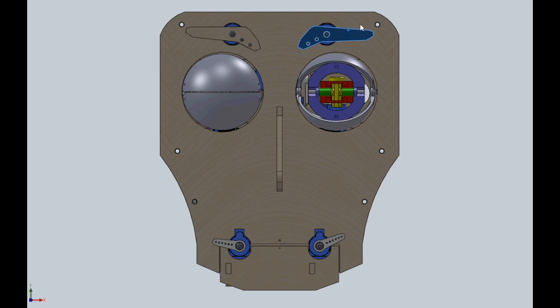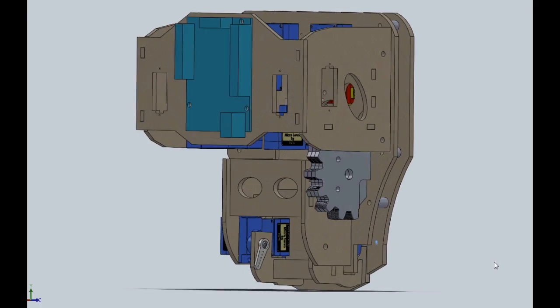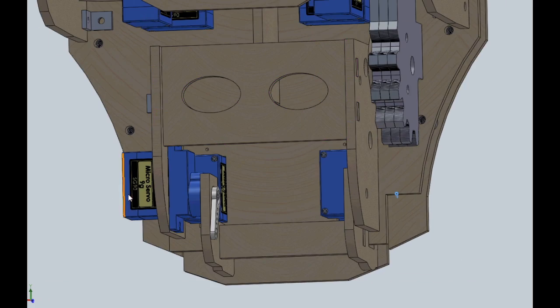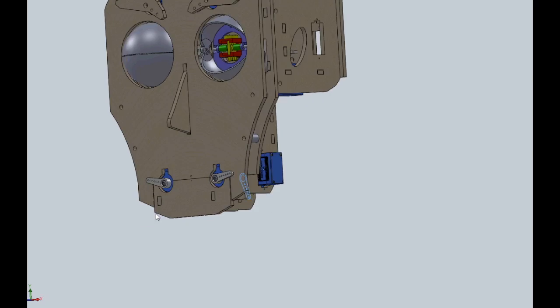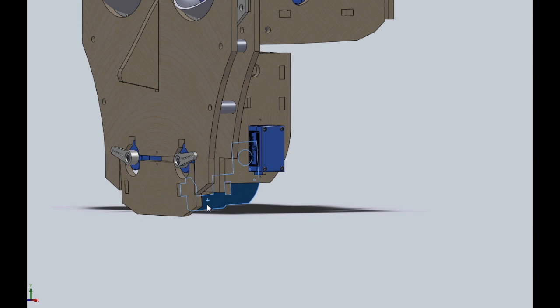The eyebrows are very simple. They just bolt onto the motor there, which shows the range of the motion. And then finally, we have the jaw motor, the last motor, and that moves the jaw up and down.